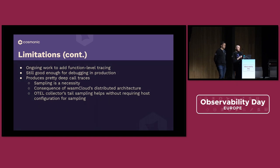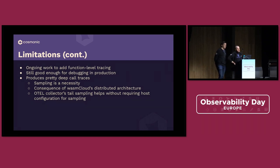What we've learned as a pro tip in this situation — and if you've worked with tracing it's probably not a surprise — is that you have to sample. You just do not have a choice unless you really like paying your observability vendor a lot of money or spending a lot of money on storage. It's a consequence of running distributed systems. What's nice about OTEL is that because the collectors are so flexible, it supports tail sampling. As somebody consuming this data, you can decide how much to keep, how much to throw away, and how much you really need at any given time to understand the boundaries of your system.